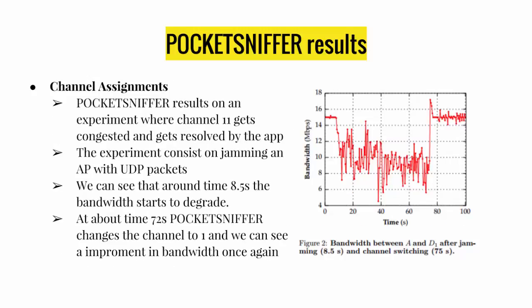Another experiment was channel assignment. The researchers set up a node-to-node connection on channel 11 and measured the bandwidth. Then they added another node and began transmitting UDP packets to jam the channel. As shown in the figure, around 8.5 seconds the bandwidth starts to degrade — that's when the channel becomes congested. At about 72 seconds, Pocket Sniffer changes the channel to channel 1, and we can see an improvement in bandwidth once again.